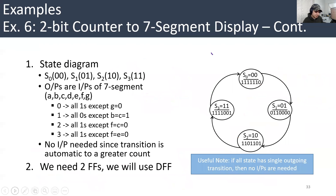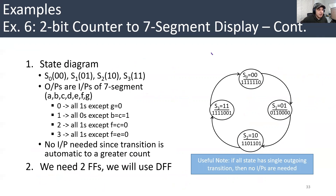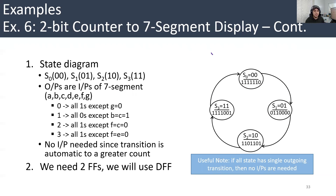Here is the solution. We said for digit zero: all are ones except G, the one in the middle. One may ask: can the designer choose that state 00 represents digit one, two, or three? Yes, of course — it's just a choice.